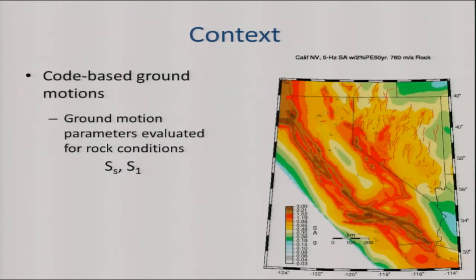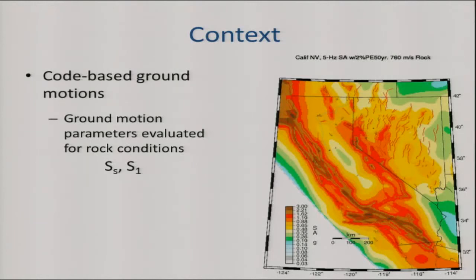The building code provides a simplified basis for coming up with ground motions for engineering design. It starts with ground motions on rock that are mapped by the USGS — this is what the NGA ground motion equations will be used to develop. The USGS maps at certain return periods the ground motions for rock site conditions. The most important parameters for building design are S_S — spectral acceleration for short periods, about 0.2 seconds — and S_1, spectral acceleration at one second. These are the mapped parameters.